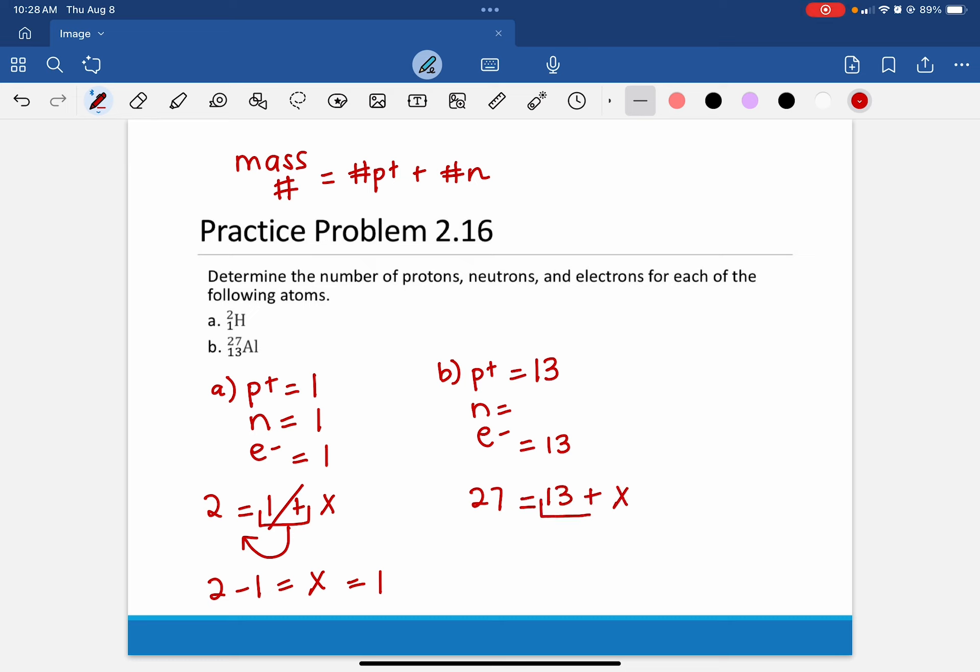Once again, we need to get x by itself. So we move this to the other side. It cancels, we do the opposite. So 27 minus 13 equals x, and 27 minus 13 equals 14.